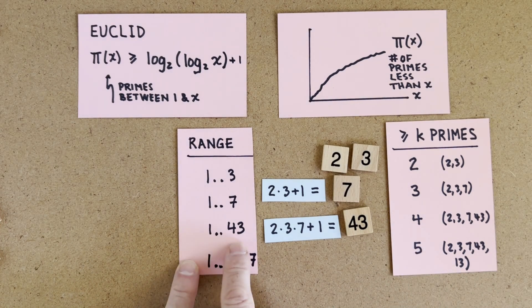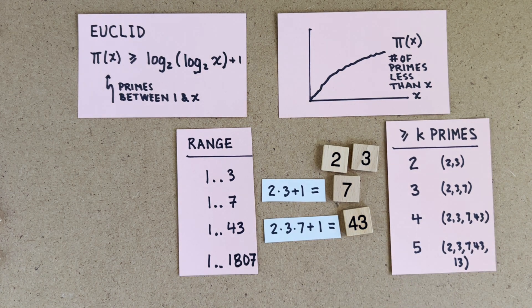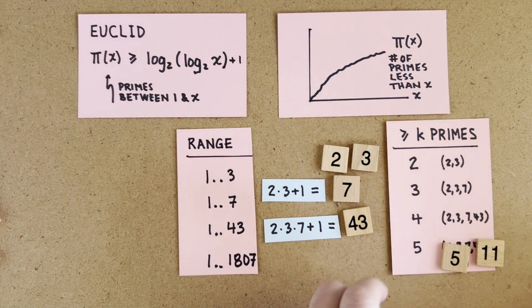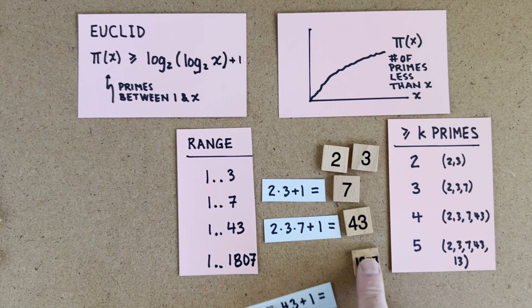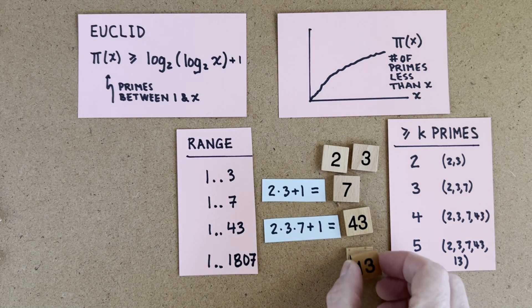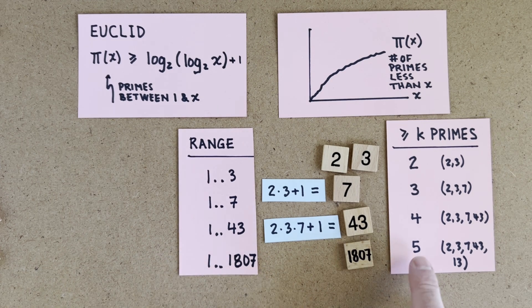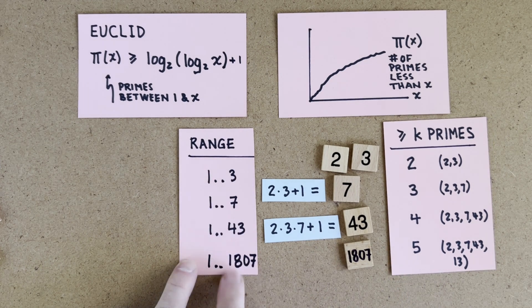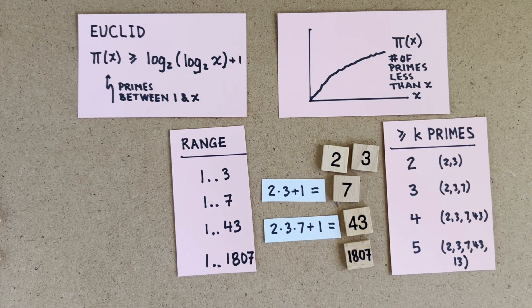So we can say that in the range from 1 to 43, there are at least 4 primes. Actually, there are a lot more primes, like 5 and 11, so we're undercounting, but that's okay. Now take 2 times 3 times 7 times 43 plus 1, which is 1807. Not prime itself, but it has a prime factor of 13. So in the range from 1 to 1807, we can confirm at least 5 primes. Now these ranges are all over the place, so we're not yet able to say π(x) is greater than such and such for all x.